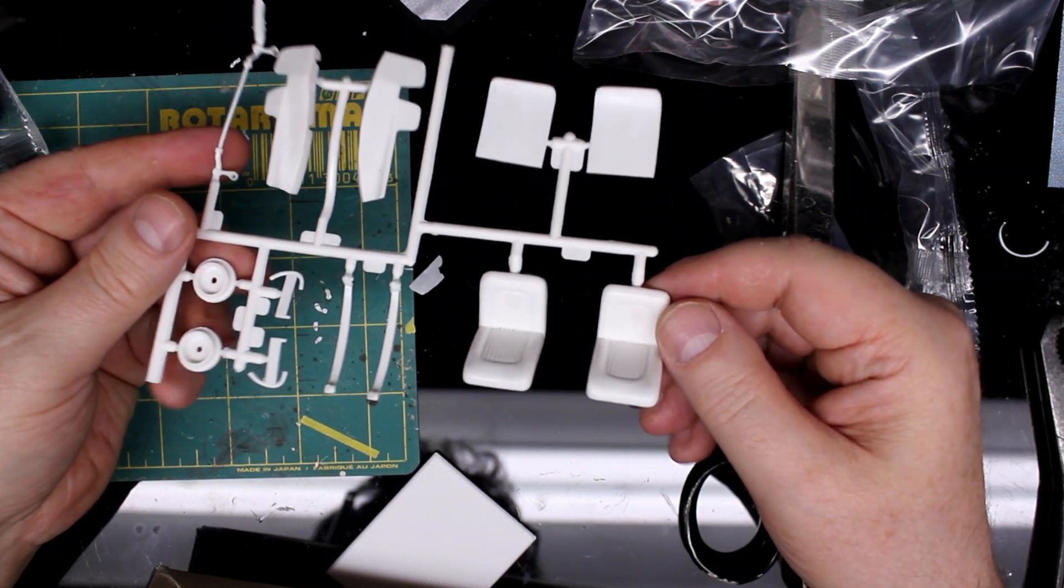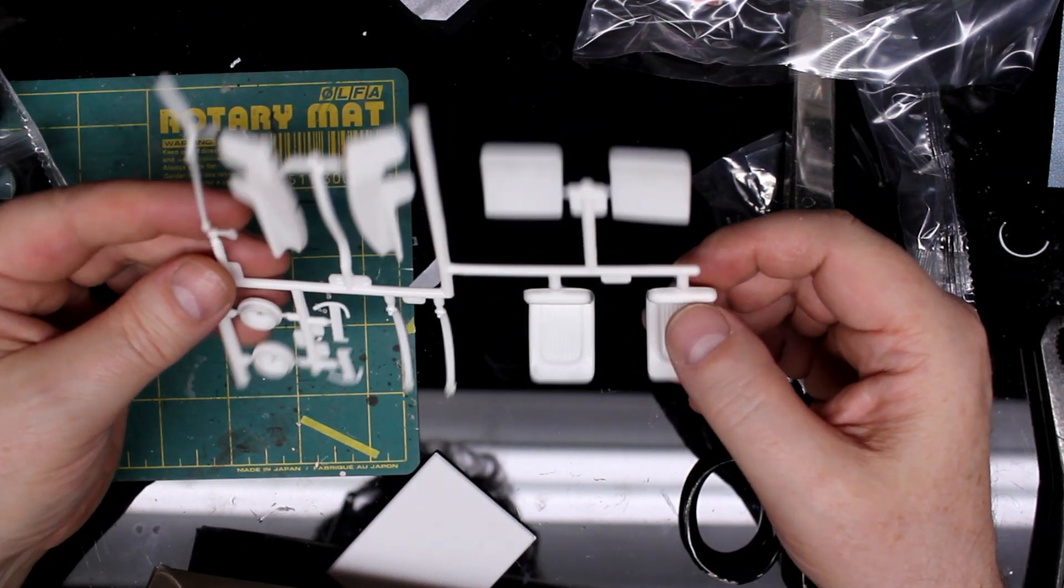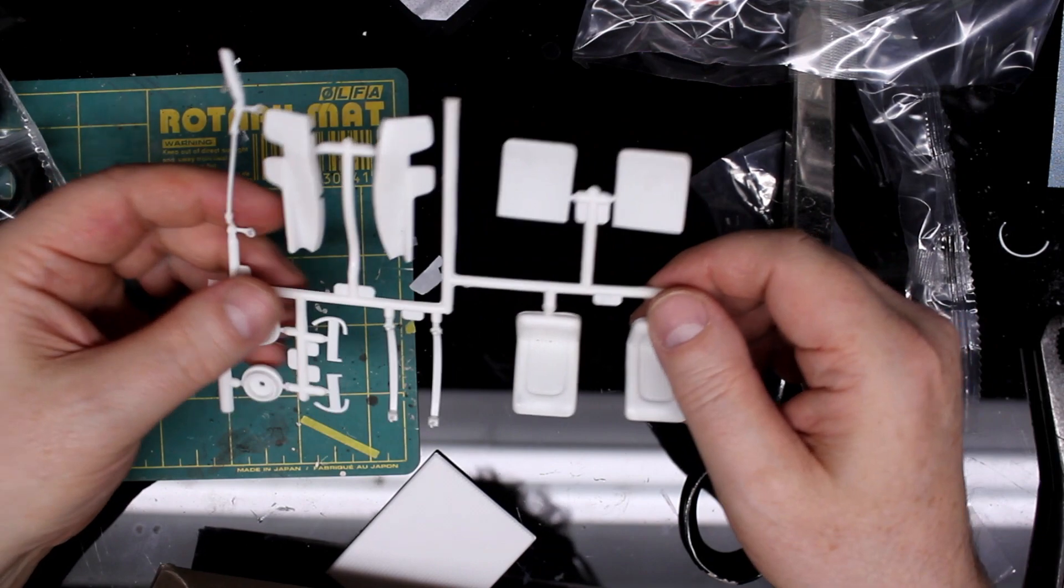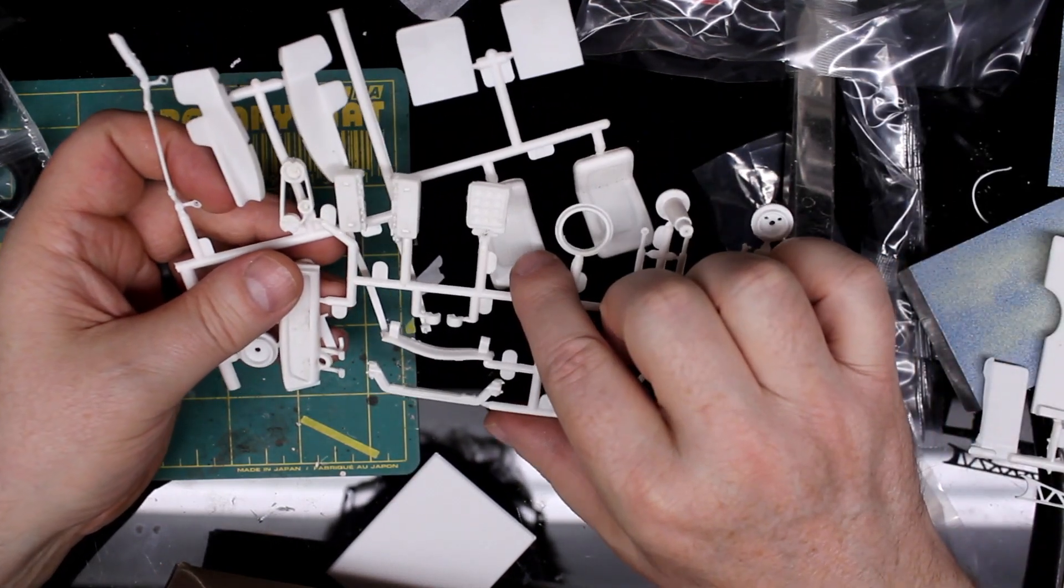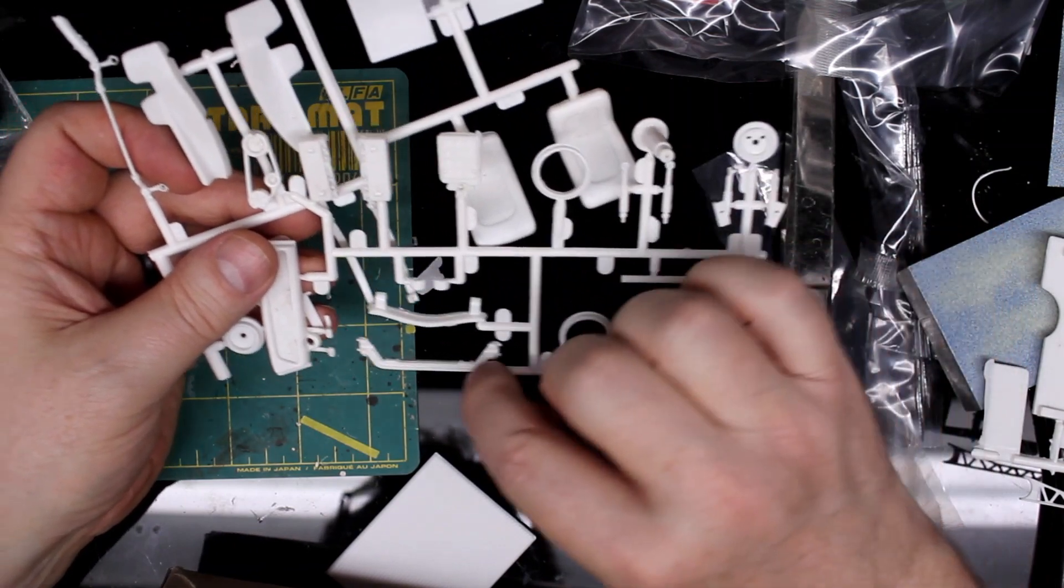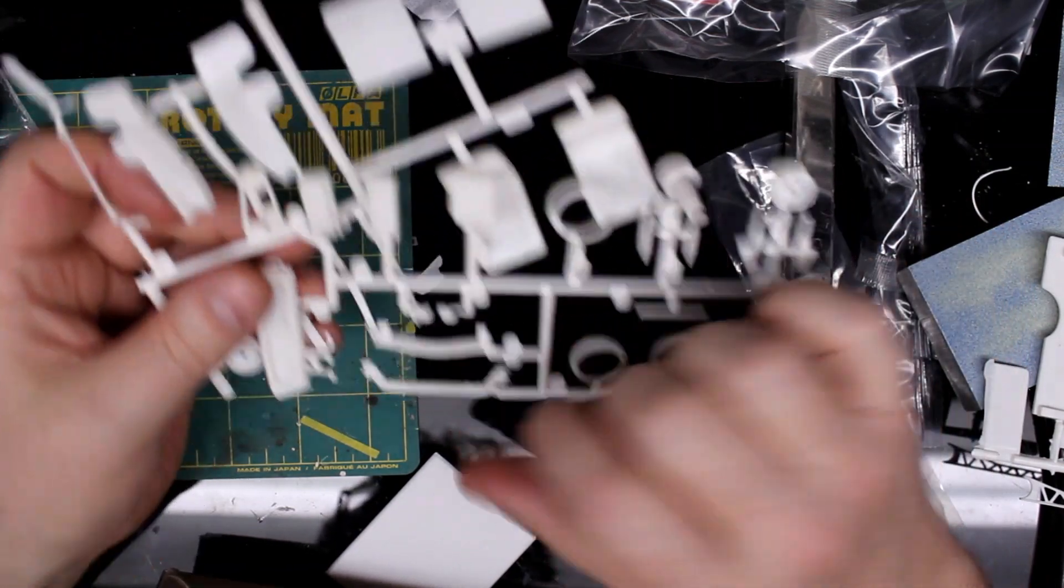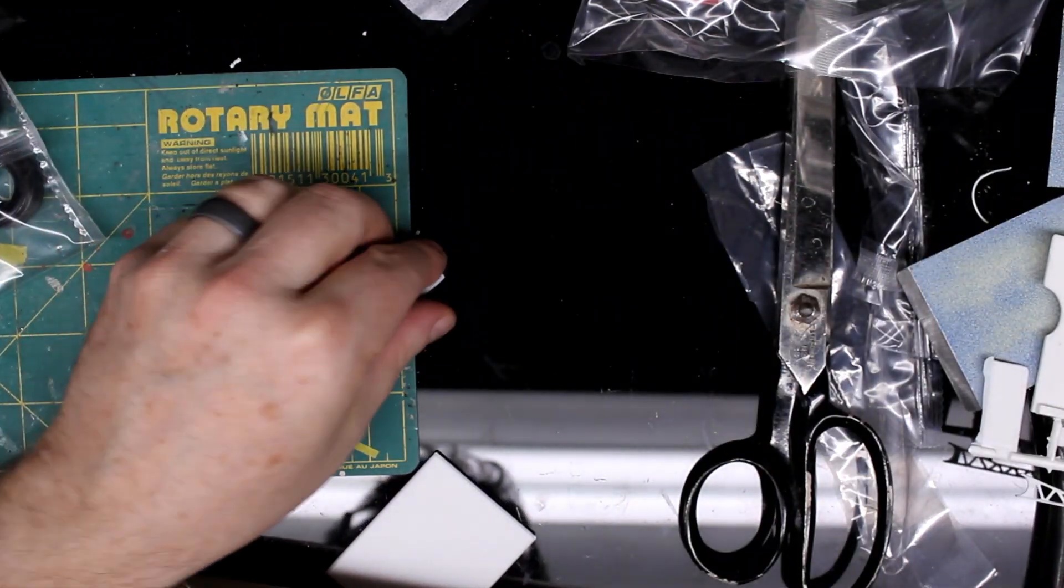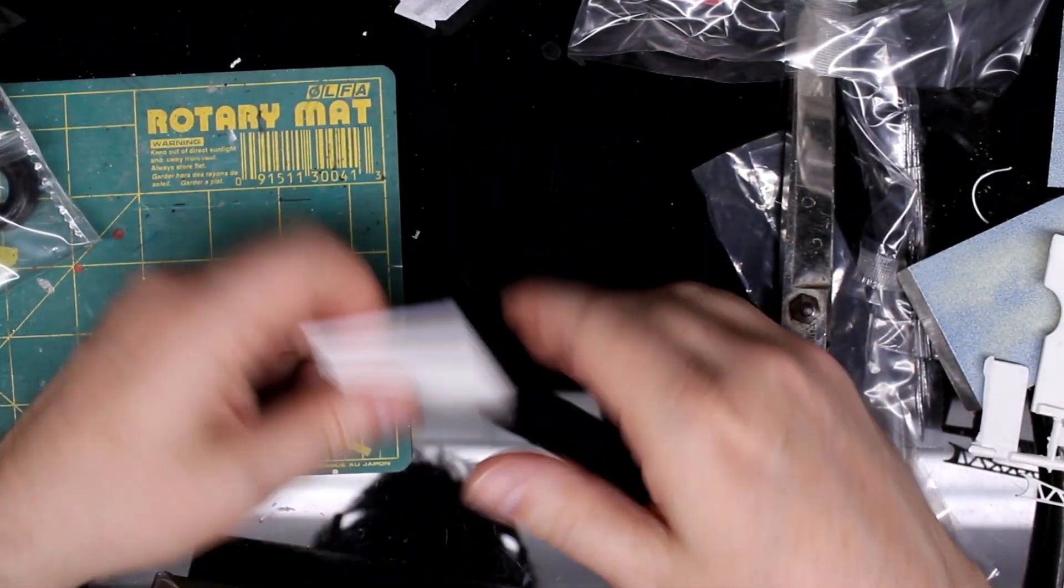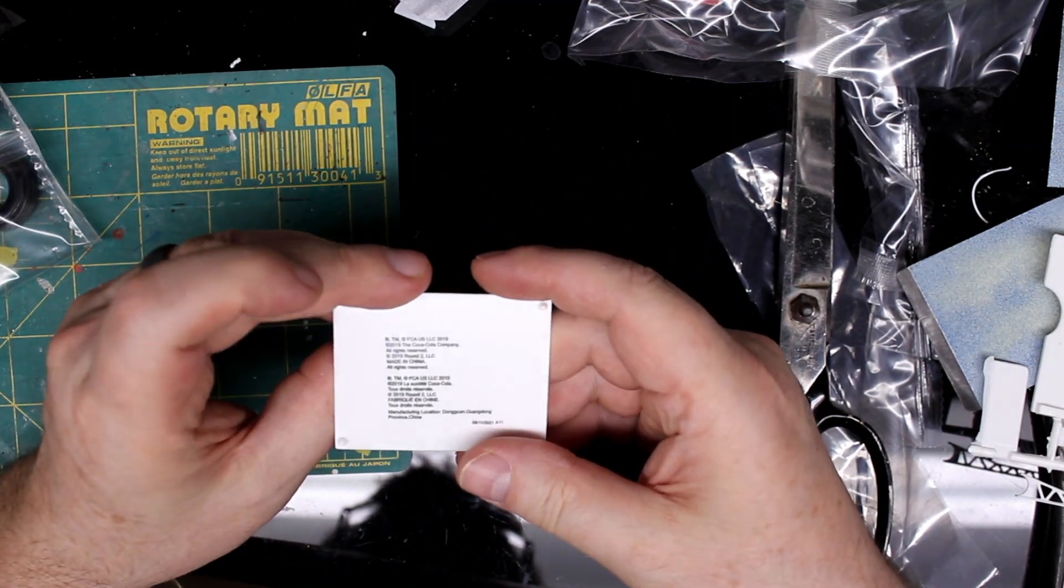There's some decent detail on the seats there. Not a lot of flash on anything, if that's something that gets you excited. I mean, there's a tiny hair bit there. There's a little bit, maybe, on those parts. Pretty good. Look at that big piece of flash. Oh, my goodness, it fell off of something. There's the bed cover.